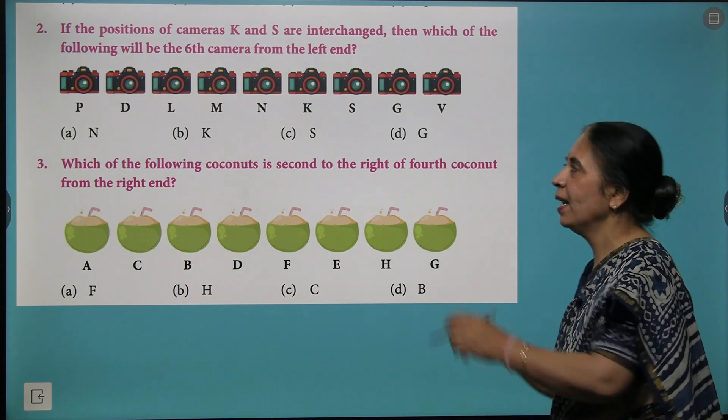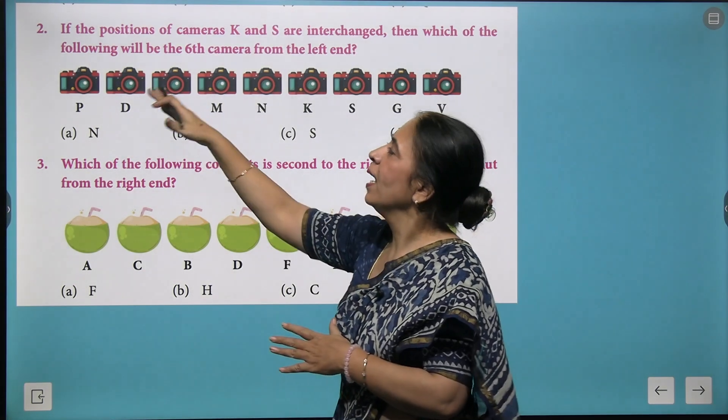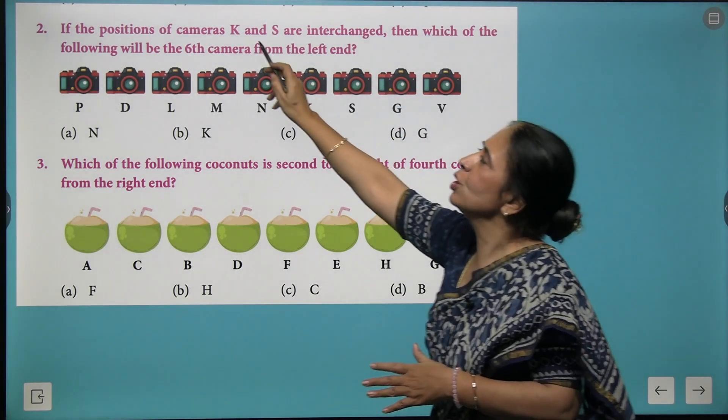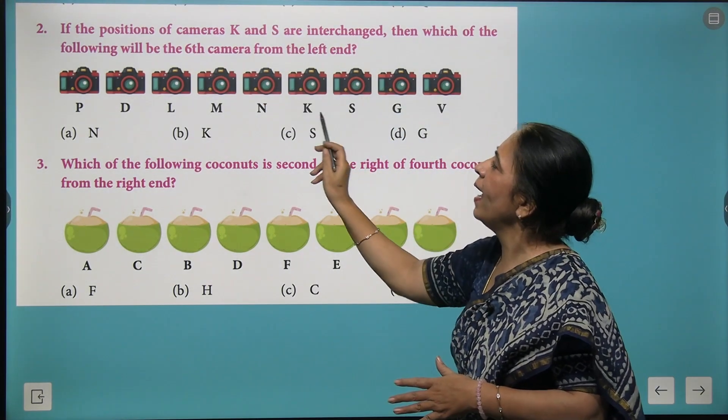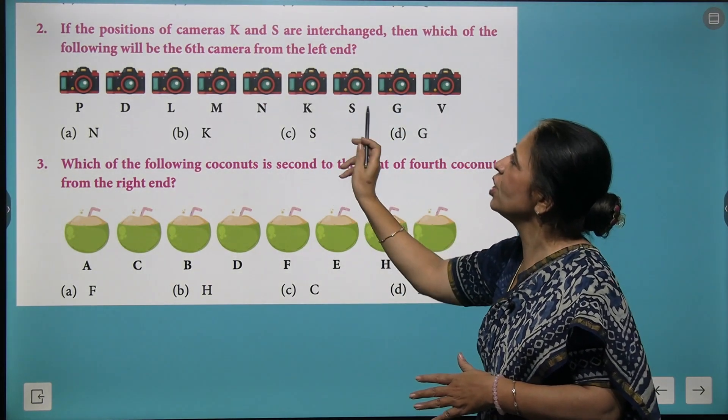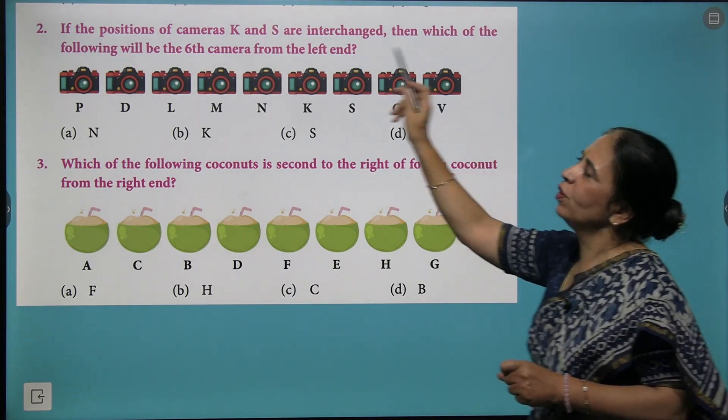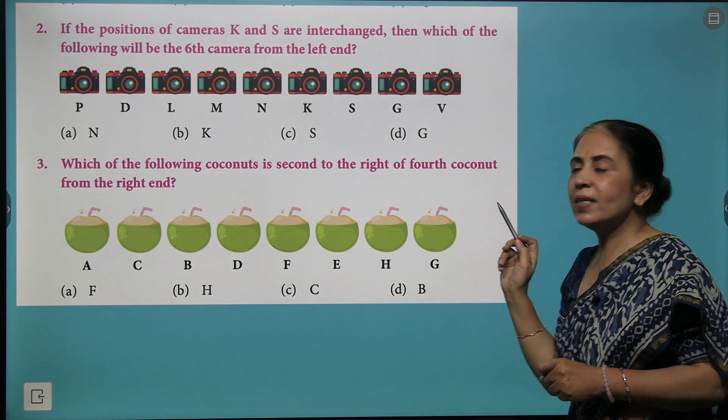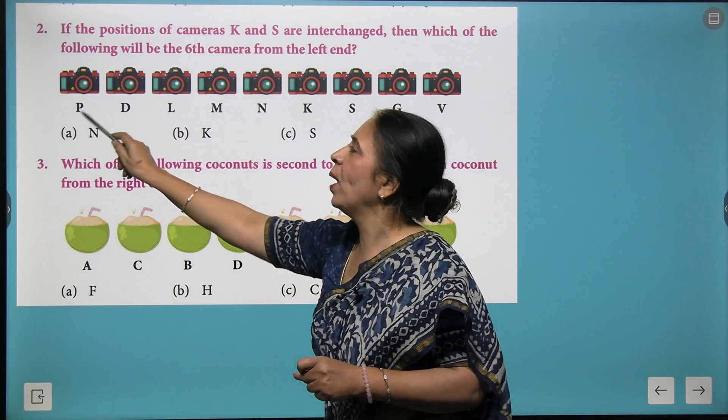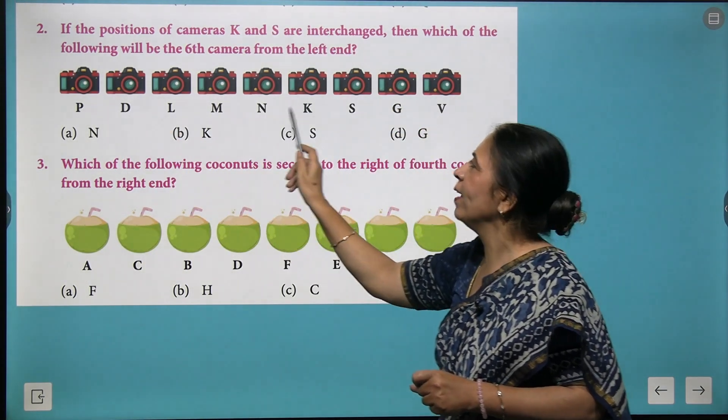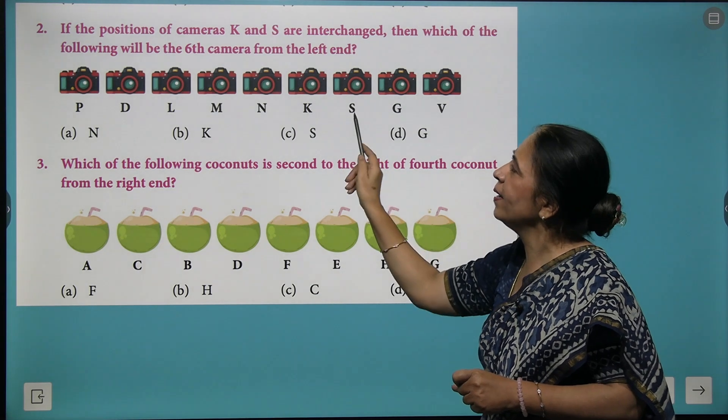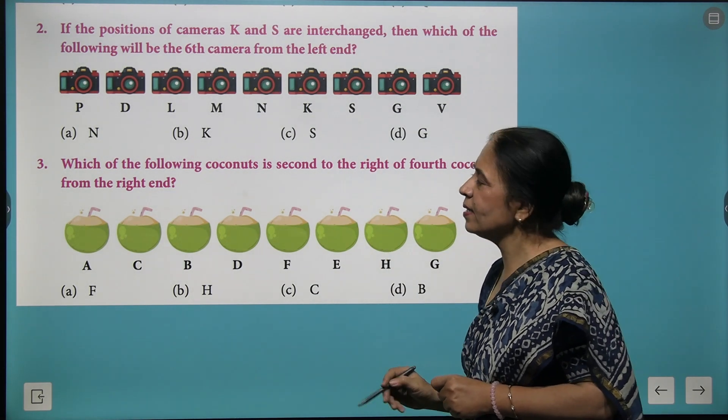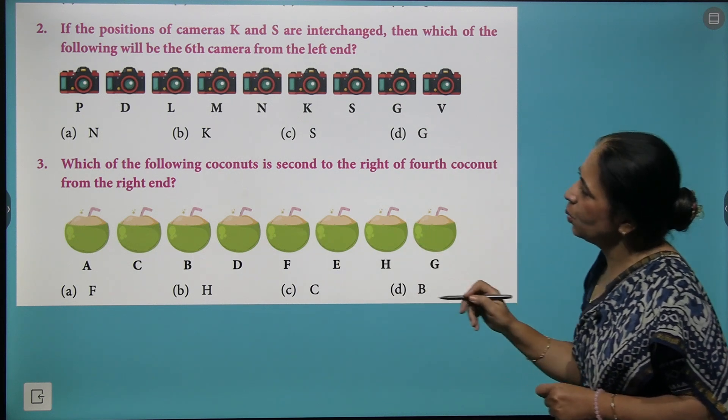Now we come at more questions. Here you are given cameras. If the positions of K and S are interchanged, which of the following will be the sixth camera from the left hand? Let's start from the left: we count 1, 2, 3, 4, 5, 6. K and S are interchanged, so S will be your correct answer.